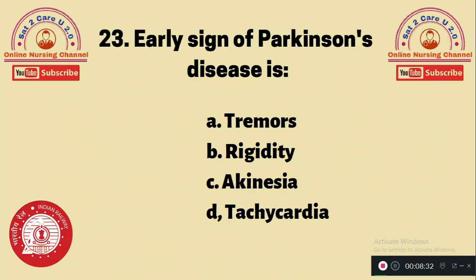Question 23: Early sign of Parkinson's disease is — A. Tremor, B. Rigidity, C. Akinesia, D. Tachycardia. The first sign of Parkinson's disease to be observed is option A — tremors.